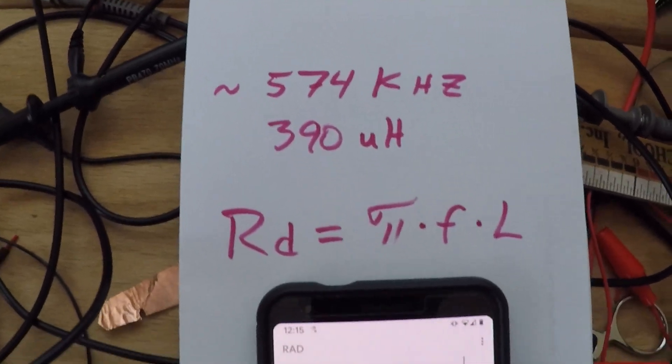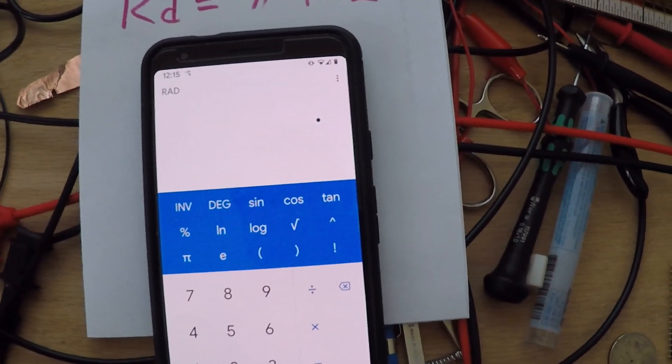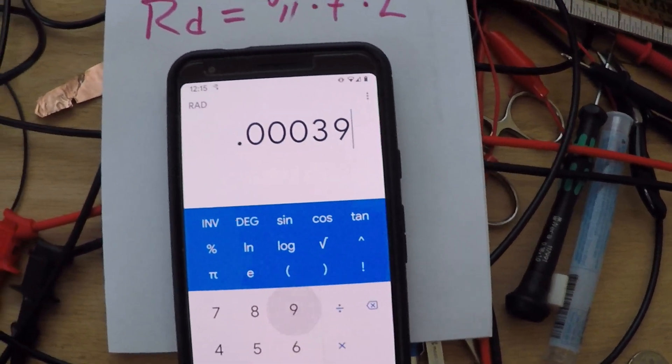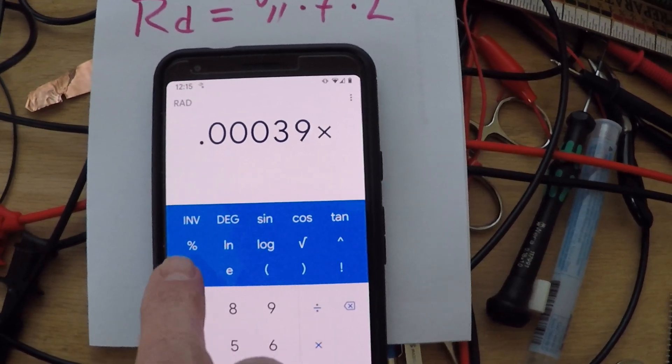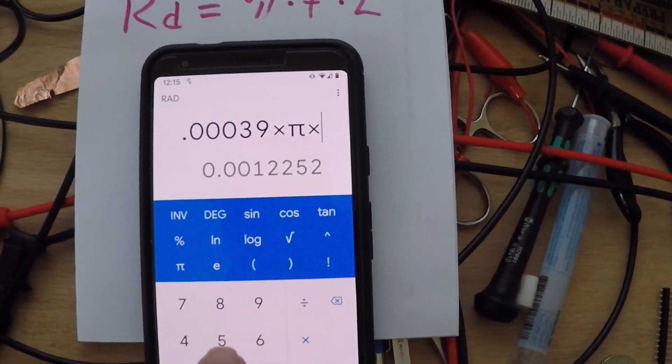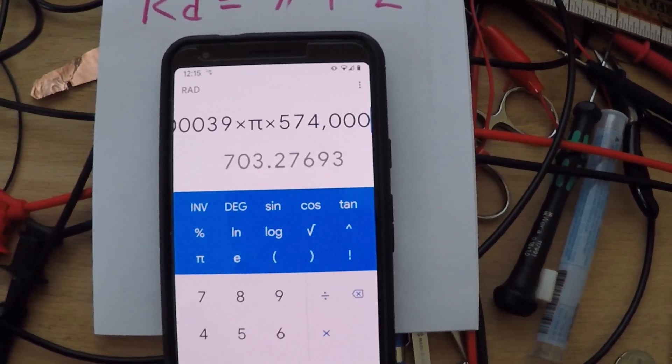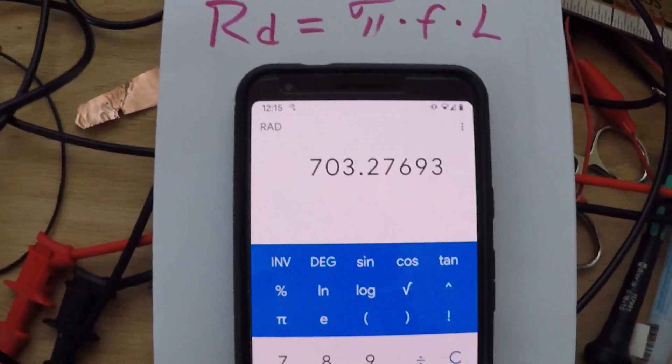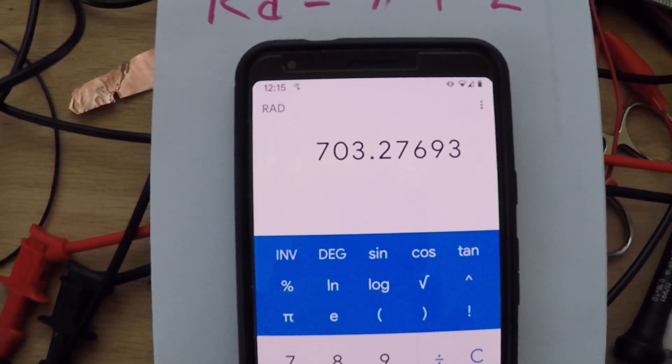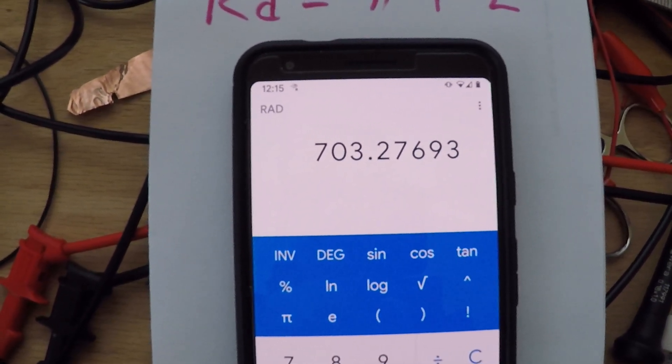So 0.00039 times pi times 574,000 equals 703 ohms.